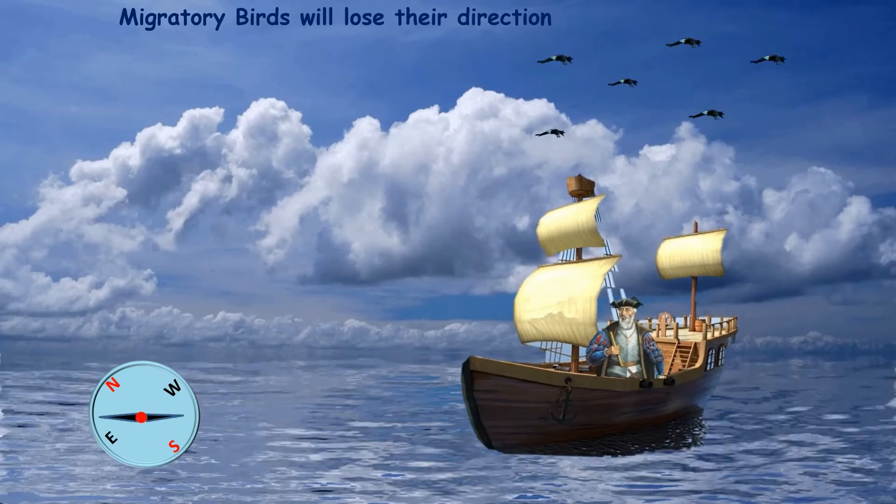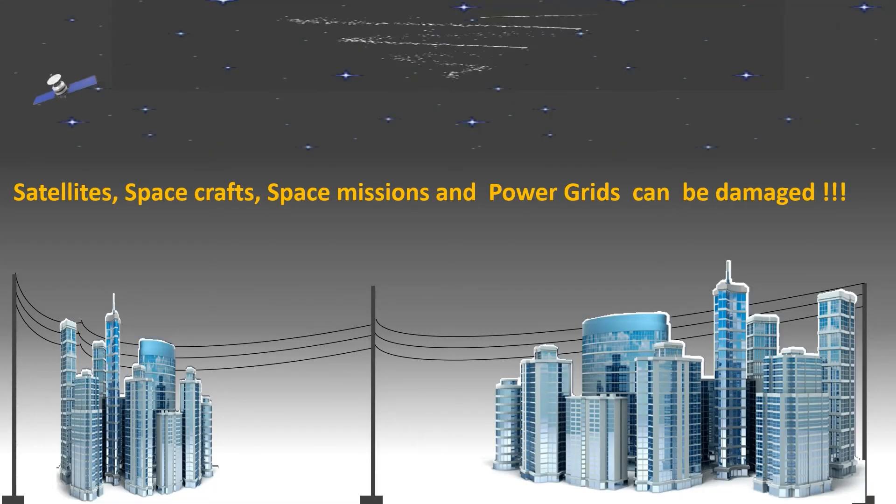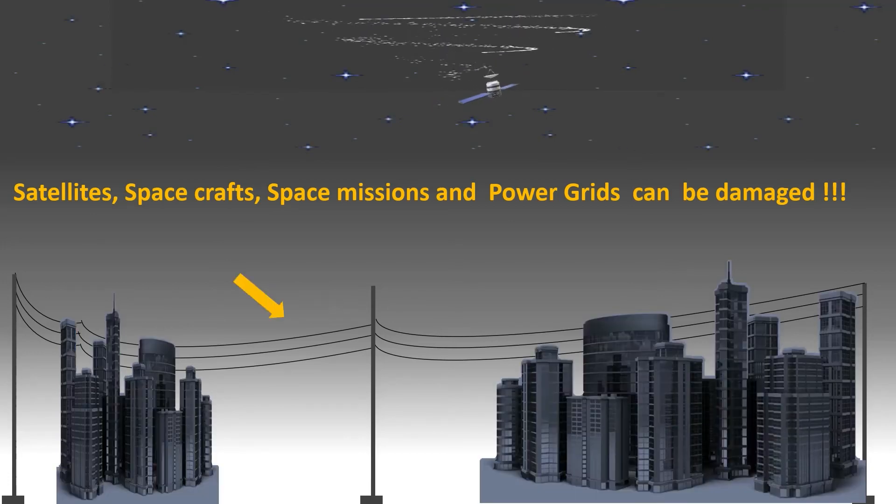Without a geomagnetic field, our advanced gadgets and systems will also be at risk. Because of exposure to high energy solar winds, satellites can suffer damage. A powerful solar flare can easily damage our power grids, as happened in 1989 in Quebec, Canada. The power grid for the entire province went off for 12 hours.